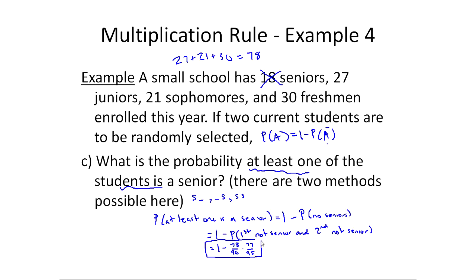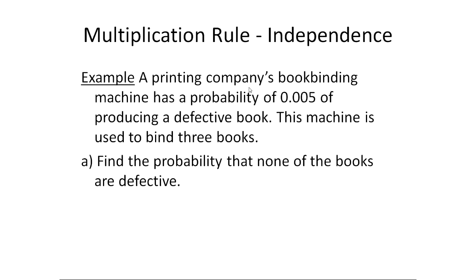So the calculation 1 minus (78/96 × 77/95) gives your final answer. There are two methods: this complement approach, or calculating all three 'and' scenarios with the multiplication rule and adding them with the addition rule — but that can be very complicated. The more possibilities there are, the more complicated that becomes. Anytime I see 'at least one,' I use the complement — it's much more straightforward. Now let's look at an example involving independence.